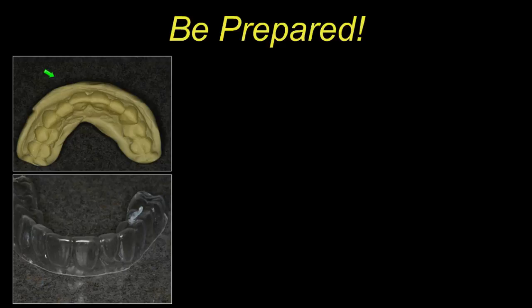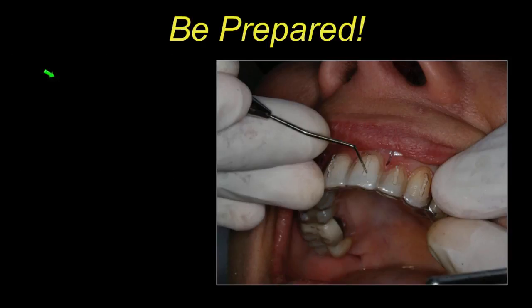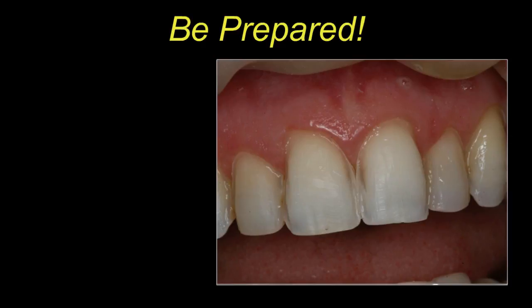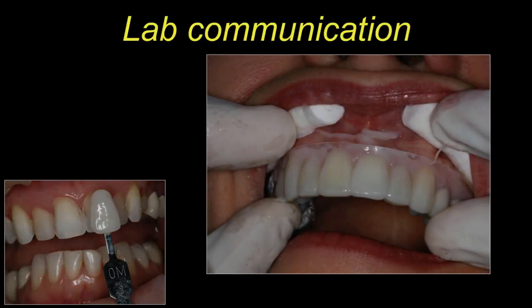I usually have a couple of templates available for every patient. Another trick: I'll sometimes take my vacuum-form stent, cut little slots in it, and measure depth reduction for veneers — that helps finish preparations. Once the preps are done, I take a stump shade. Don't put the shade tabs on top of the teeth — hold them at the same plane so the light hits them correctly. Then I'll seat the stent to show the importance of having a good wax-up and a well-made matrix.